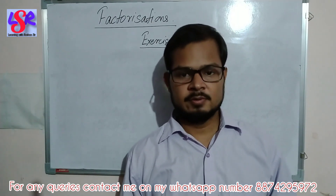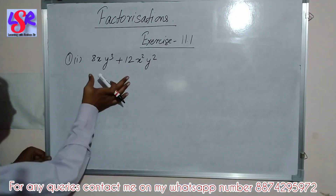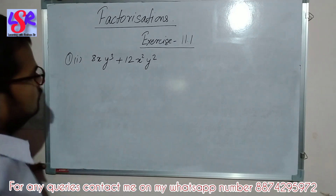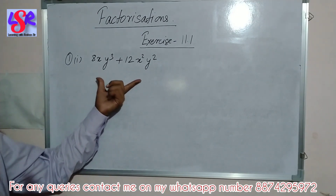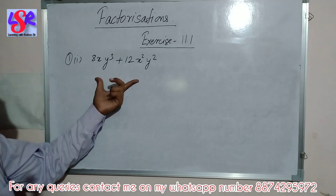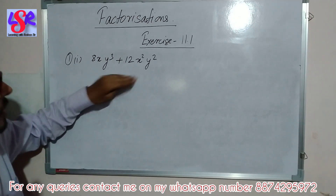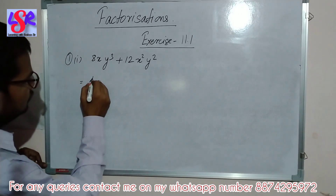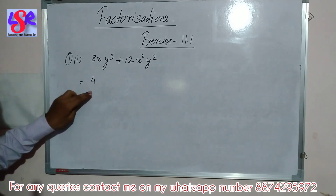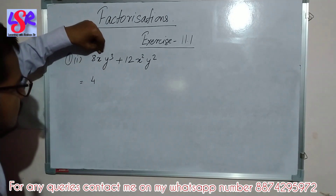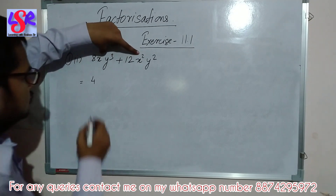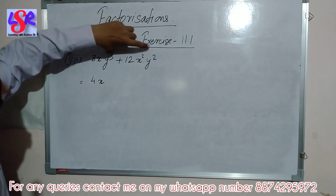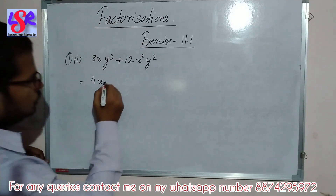Now we start with exercise 11.1. Here we are having question number 1, first part: 8xy + 12x²y². We have to factorize this expression, and for factorization we will find the greatest number which can divide these two. So 8 and 12 are both divisible by 4. We can take 4 from the numbers, then we are having 1x here and 2x here, so we can take 1x from these two. Then here we are having 3y and here 2y, so we can take 2y.